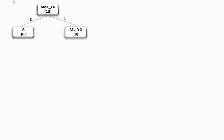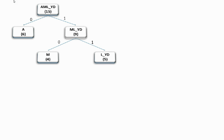This group is again divided into two branches — branch 0 and branch 1. Branch 0 contains the character M with four counts, and branch 1 contains the remaining characters L, space, Y, and D with a total count of five.